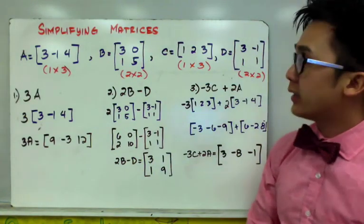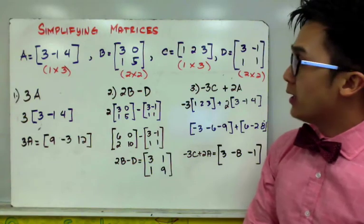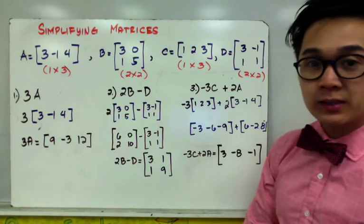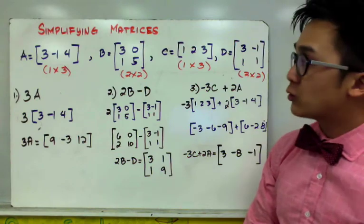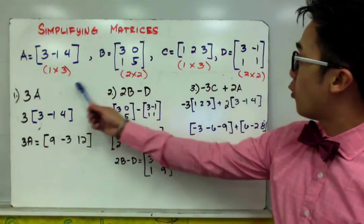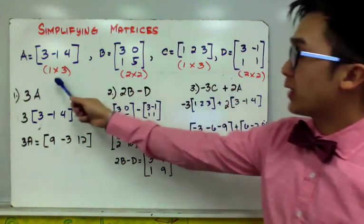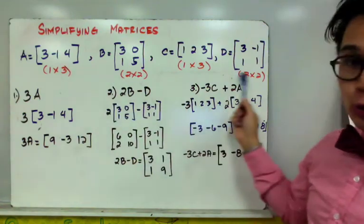Another operation in a matrix is the scalar multiplication. So scalar multiplication is basically distributing a constant outside the matrix into each entry in a given matrix. So I have here 4 given matrices, matrix A, B, C, and D, in their corresponding orders.